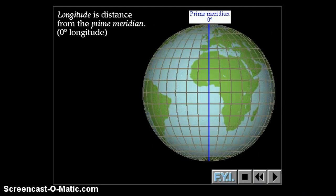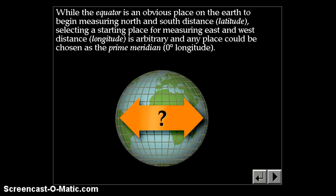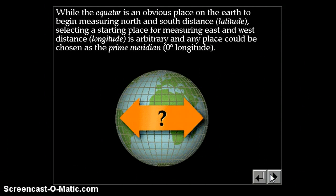Longitude is the distance away from the prime meridian, and the prime meridian is zero degrees longitude. The equator is a logical choice for measuring north and south because it splits the Earth in half with respect to its spin poles. That's not true for longitude — longitude is arbitrary. You could really put it any place, and any place would make as much sense as any other.